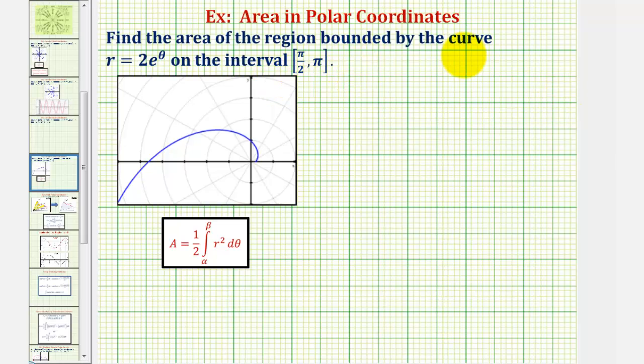We want to find the area of the region bounded by the polar curve r equals two times e raised to the power of theta on the closed interval from pi over two to pi.